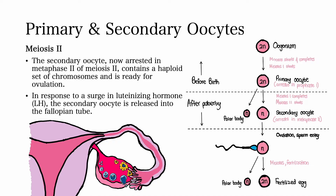Meiosis II. The secondary oocyte, now arrested at metaphase II of meiosis II, contains a haploid set of chromosomes and is ready for ovulation. In response to a surge of luteinizing hormone, also known as LH, the secondary oocyte is released into the fallopian tube.